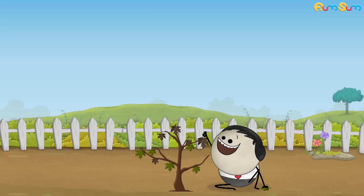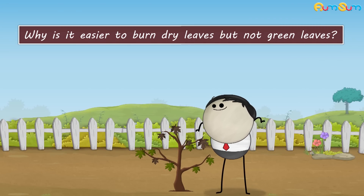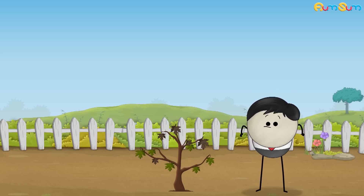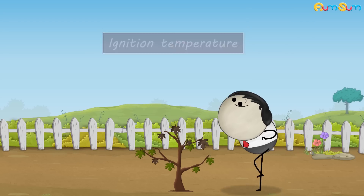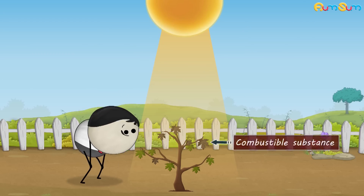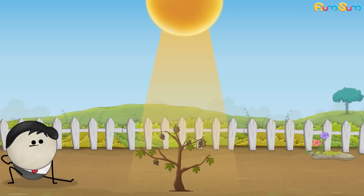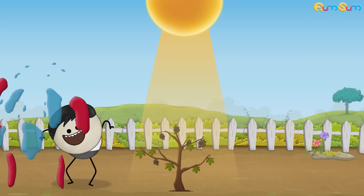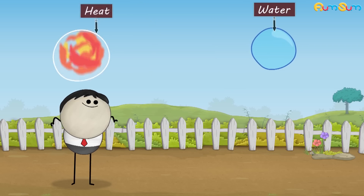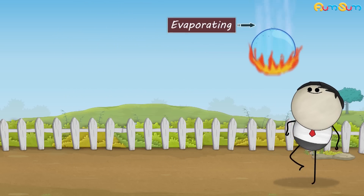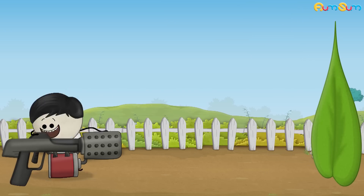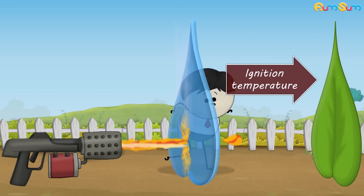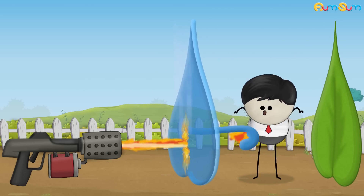Why is it easier to burn dry leaves but not green leaves? It is because of ignition temperature. Ignition temperature is the lowest temperature at which a combustible substance starts burning. Now, green leaves have moisture or water in them. Water has a property of absorbing a huge amount of heat before evaporating. Hence, when we try to burn green leaves, a large amount of heat is required to first evaporate the water, and then to reach the ignition temperature of the leaves, thus not allowing the leaves to catch fire easily.